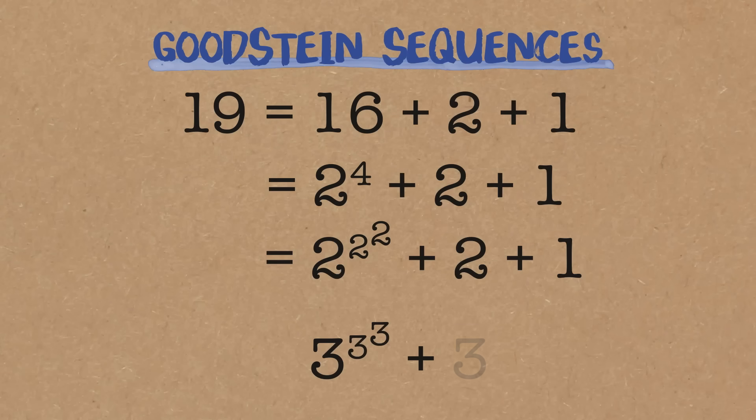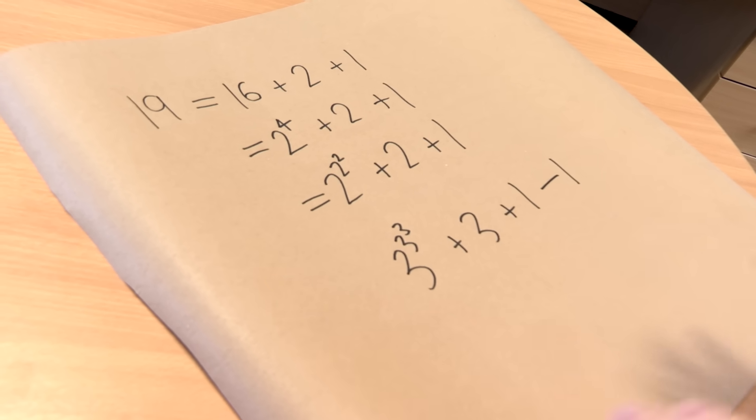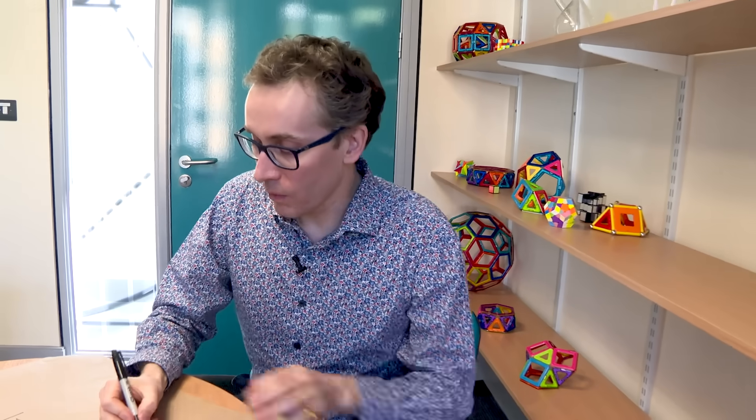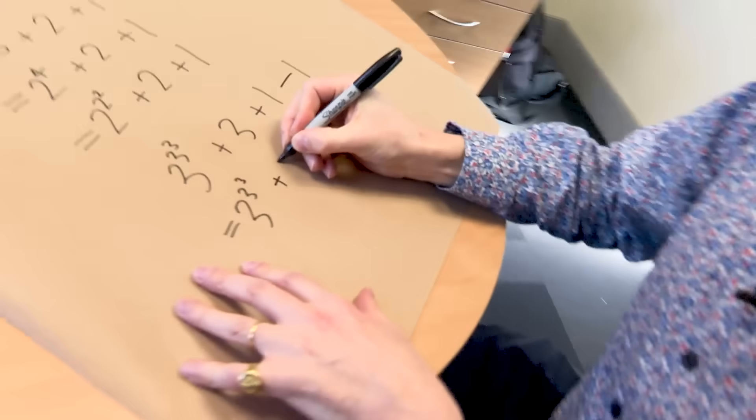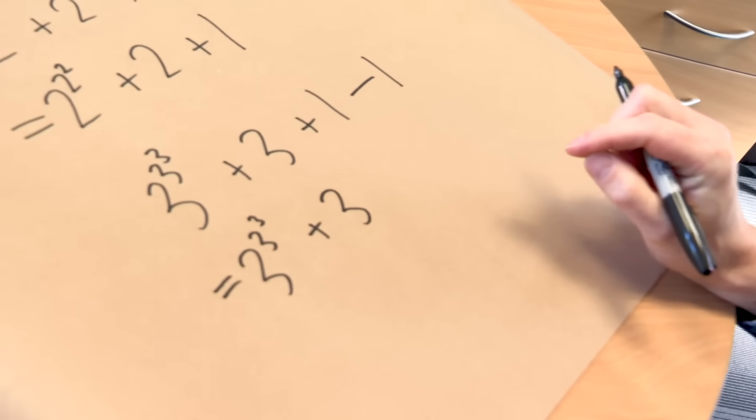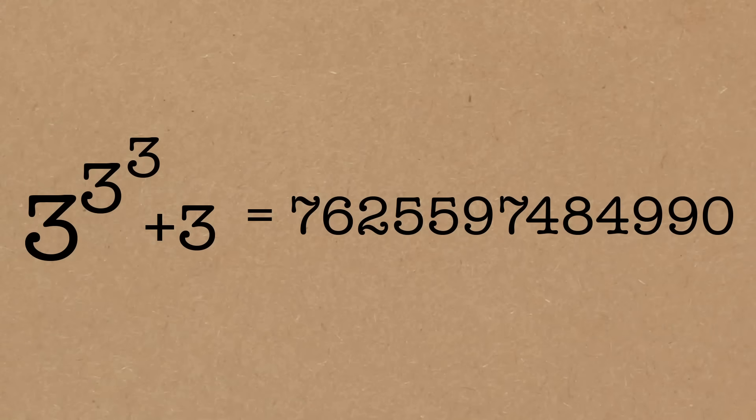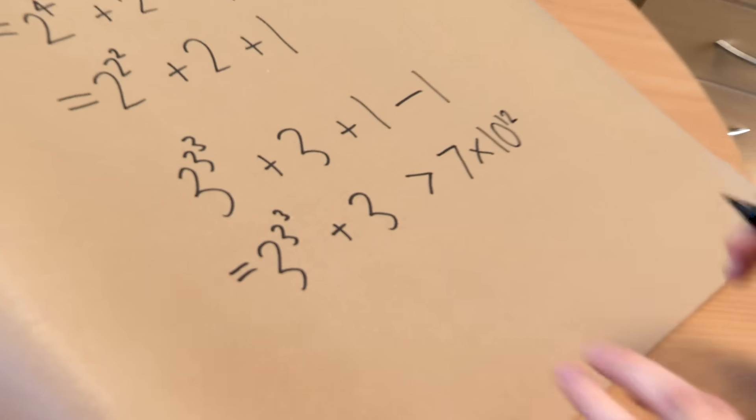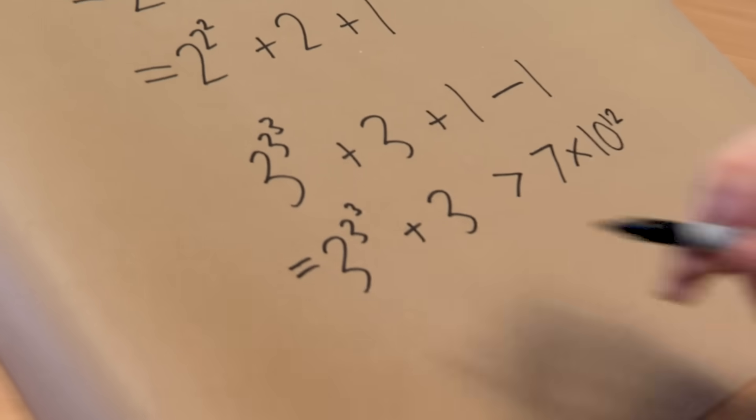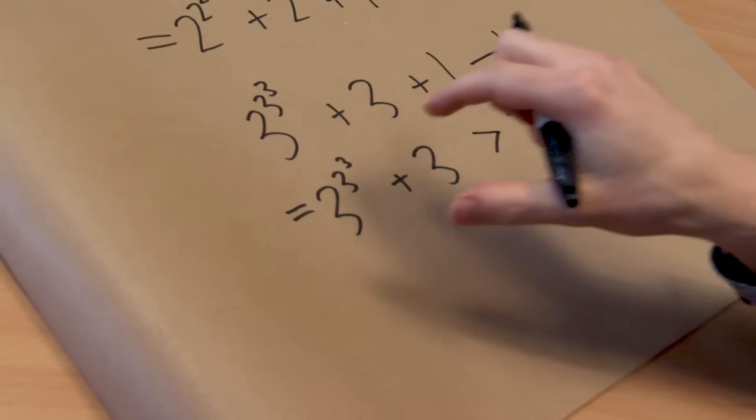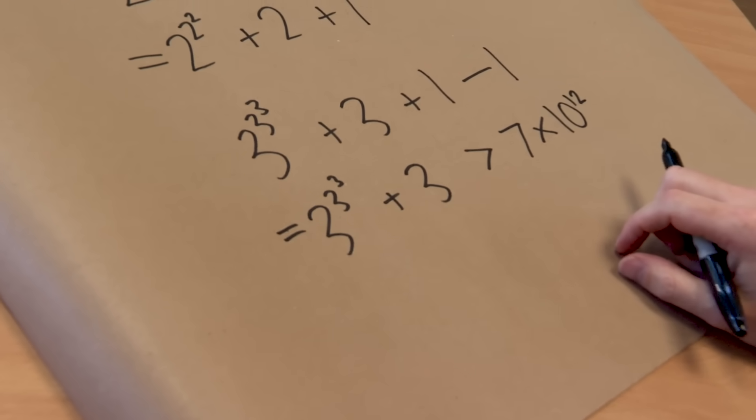What we do next is there's two steps, and we're going to create a new number. The first step is to replace every 2 we can see with a 3, 3 to the 3 to the 3 plus 3 plus 1, and then we subtract 1. So I did two steps there, replace all the 2s with 3s, and then subtract 1. So if you work out how big this number is, this is actually quite a big number. This is now bigger than 7 trillion, so it's bigger than 7 times 10 to the 12. Why is that so big? Because 3 to the 3 to the 3. Once you've got these towers of powers, numbers get big quickly.